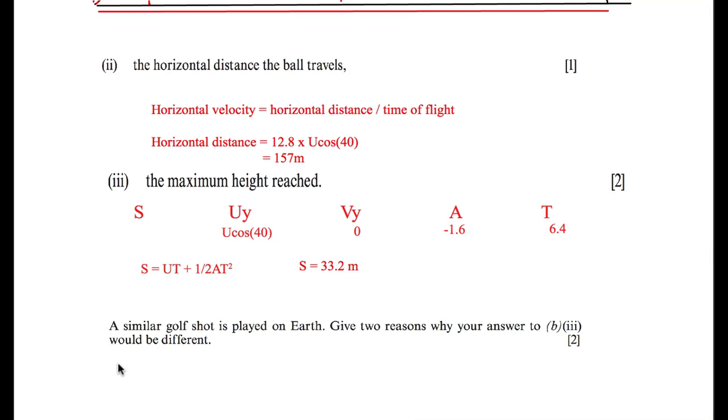The last part of the question says a similar golf shot is played on Earth. Give two reasons why your answer to B part 3 would be different. So the two reasons why it would be different would be first, that on the Earth, the acceleration is very different. Because the Earth is a lot larger in mass, our acceleration downwards is a lot greater. So on the Moon, it's minus 1.6. On Earth, it's minus 9.81. Finally, on the Moon, there's no air, so there can't be any air resistance. However, on Earth, because we have an atmosphere, there will be air resistance. I've just written those two points down here.